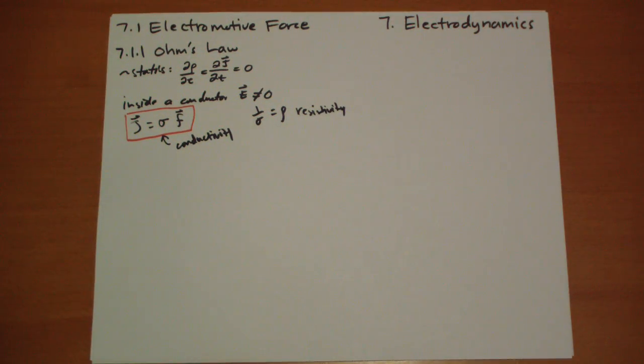It's a characteristic of matter. It doesn't depend on the geometry or anything like that. If you have something, it has a conductivity or resistivity. What's interesting is that insulators, even our insulators, have a conductivity.